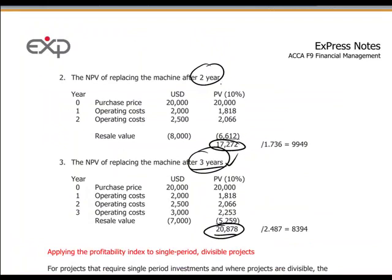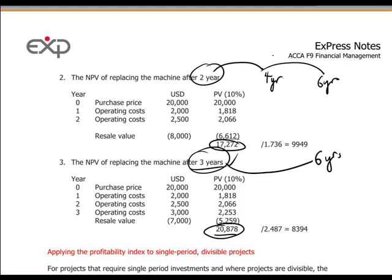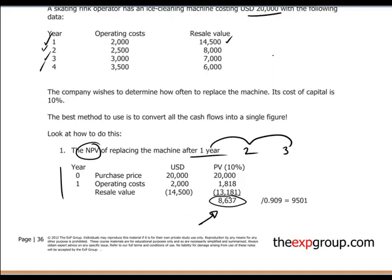To make the cycles comparable, we would need to extend them to a common timeframe — for example, six years: the one-year cycle repeated six times, two-year cycle repeated three times, and three-year cycle repeated twice. However, that is time consuming. The trick and key point is to convert the NPV into a so-called equivalent annual cost.